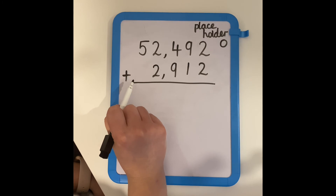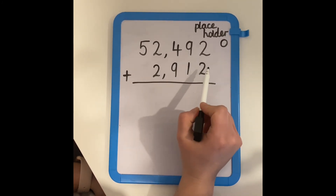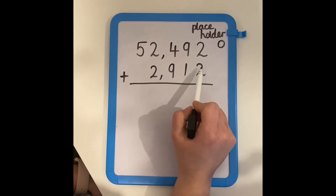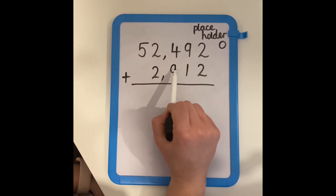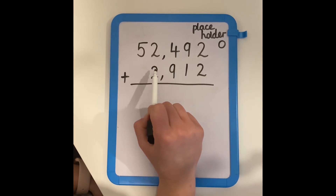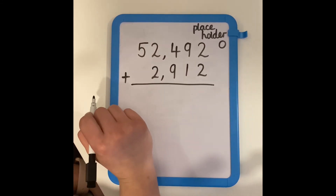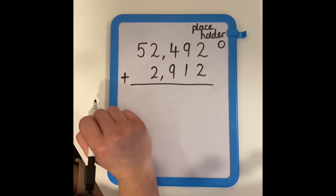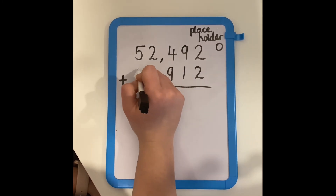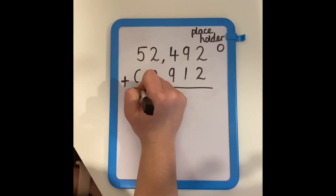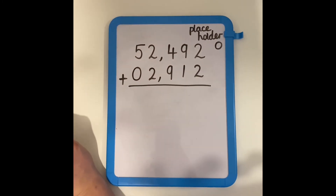Looking at my equation, I can see that both my numbers have ones, tens, hundreds, and thousands, but only one of my numbers has a ten thousands digit. So I know that my placeholder is going to go in the ten thousands column.